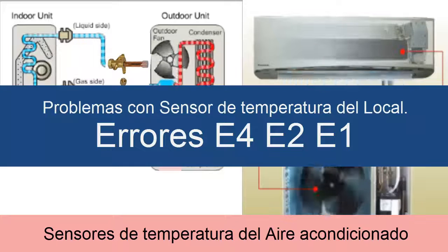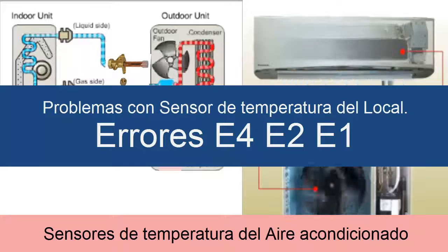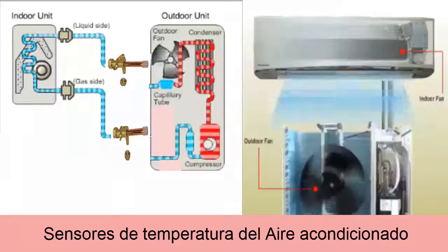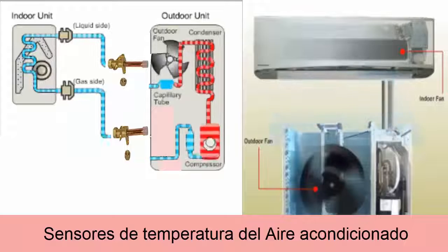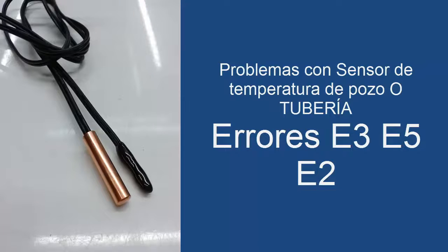We can also have the well sensor, which is responsible for verifying that there is no freezing of the evaporator. When there are problems with this sensor, we will find the codes E3, E5, and E2.